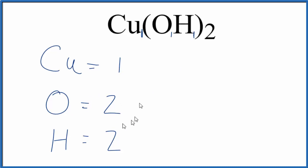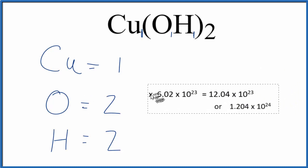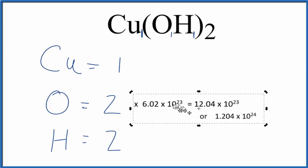So we take two times Avogadro's number, right here, and that will give us the number of oxygen atoms in copper two hydroxide.